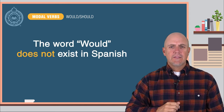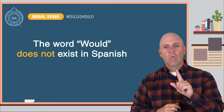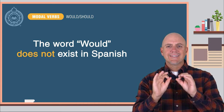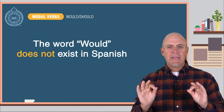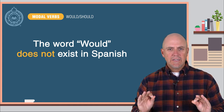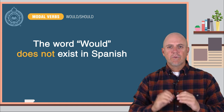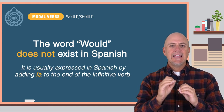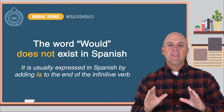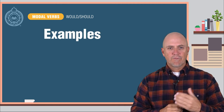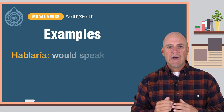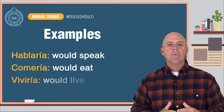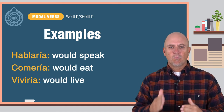Before you try the initial activity, let me give you one clue. The word WOULD does not exist in Spanish — there is no translation or word for it. It is usually expressed in Spanish by adding -IA to the end of the infinitive verb. For example: hablaría — would speak, comería — would eat, or vivería — would live.